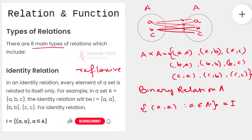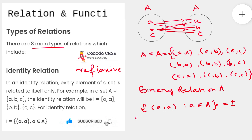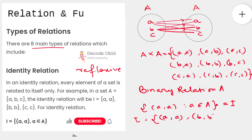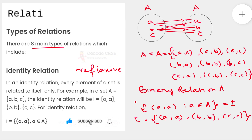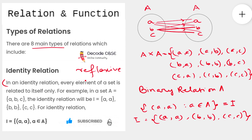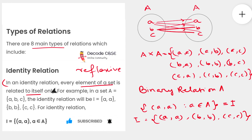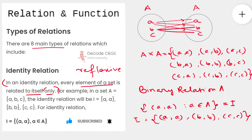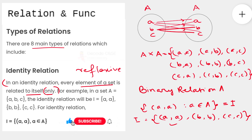Using the roster method, the identity relation will contain only three ordered pairs: (a, a), (b, b), and (c, c). In definition terms, in an identity relation every element of a set is related to itself only. This is the key word to remember — in case of identity relation you will end up with only ordered pairs where both elements are the same, such as (a, a), (b, b), and (c, c) for a set with three elements a, b, and c.